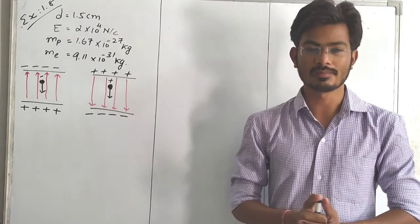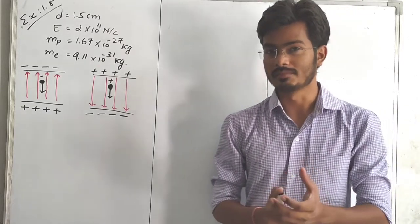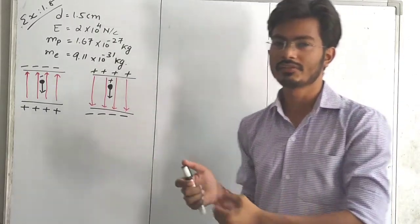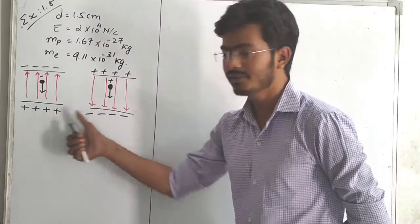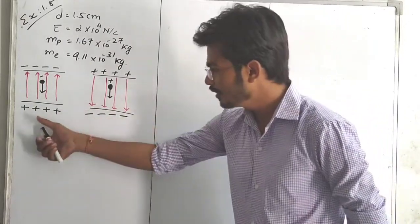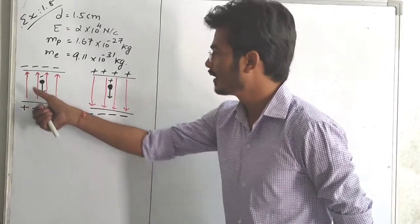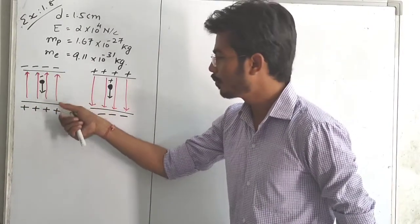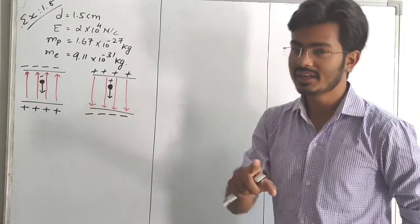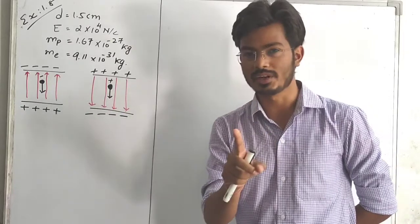So dear students, in this example what we have to find out? We have to find out the time. According to the given figures, figure A and figure B, we have mentioned here. According to this figure, there is a positive charge and a negative charge, so from positive to negative there is an electric field. And in both cases the electric field magnitude is the same.